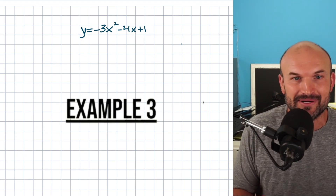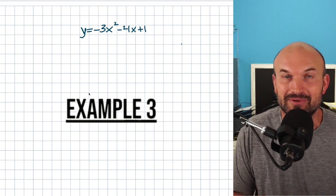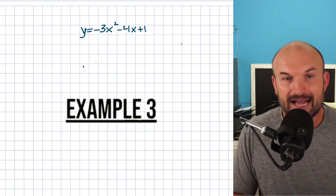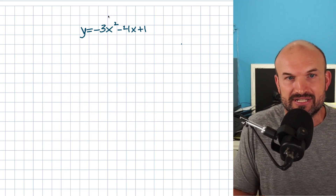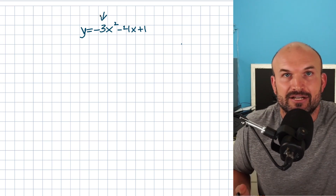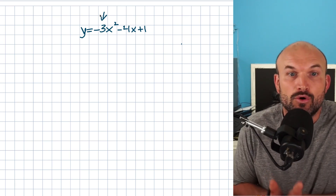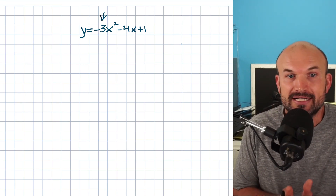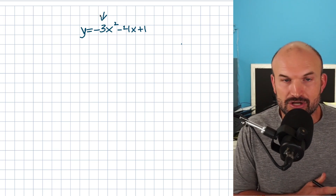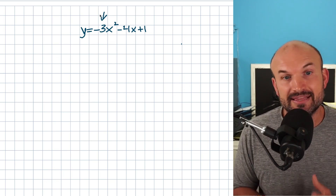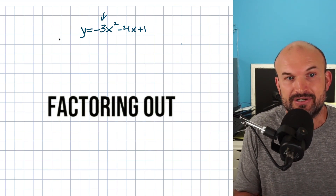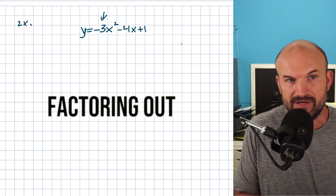Let's start with a fresh slate for the final, more difficult example. The reason this one is more difficult is because we have a coefficient on the x squared term. I said from the beginning you cannot have a coefficient on your x squared when completing the square — we need to get rid of it. There are a couple of different ways, and in this video I want to focus on factoring it out.